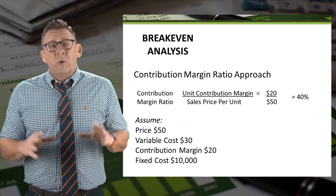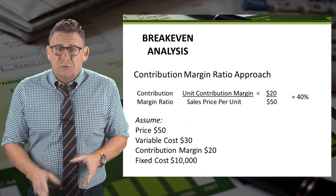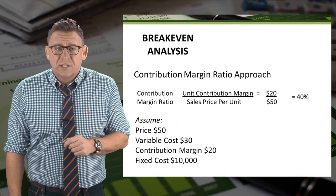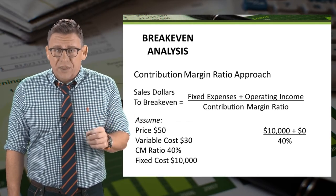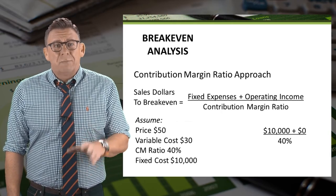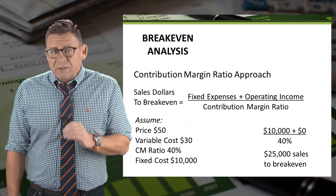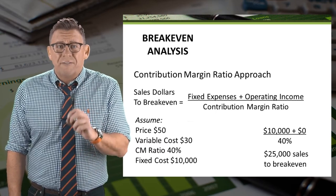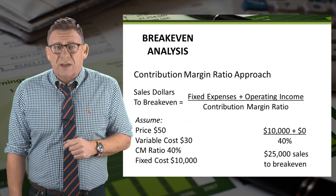Using this information, we can calculate that the contribution margin ratio is 40%. So the calculation is $10,000 plus zero, divided by 40%. Thus we've calculated that the sales revenue to breakeven is $25,000.